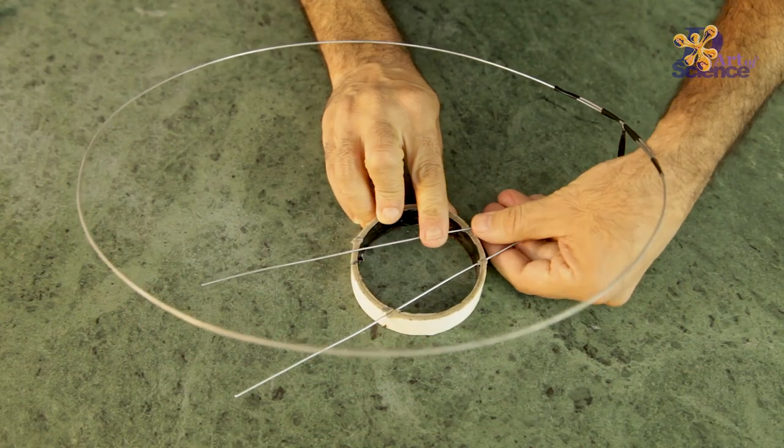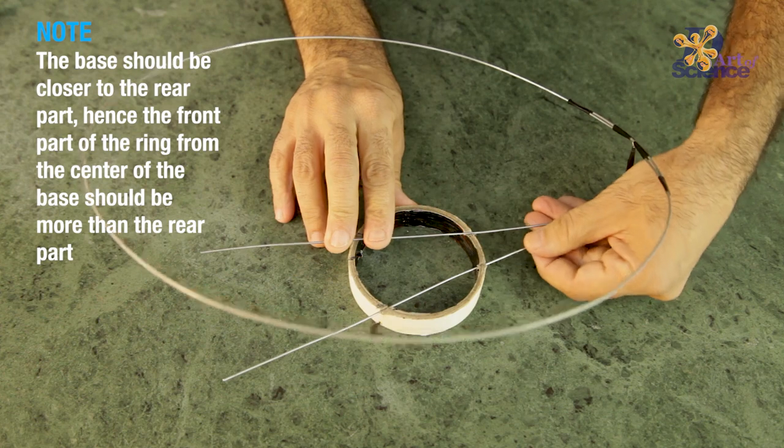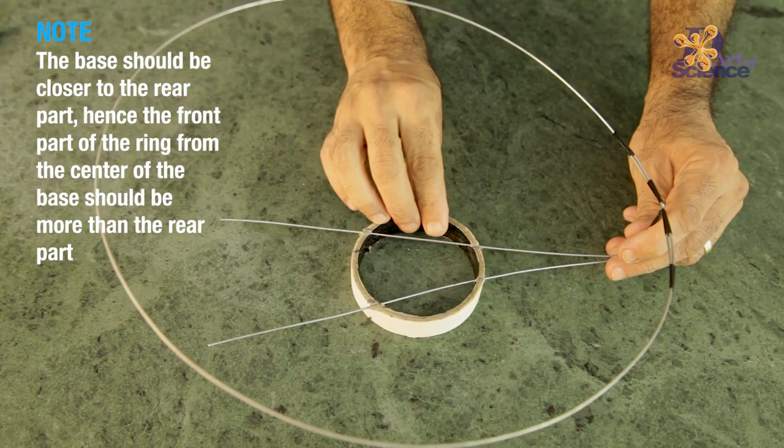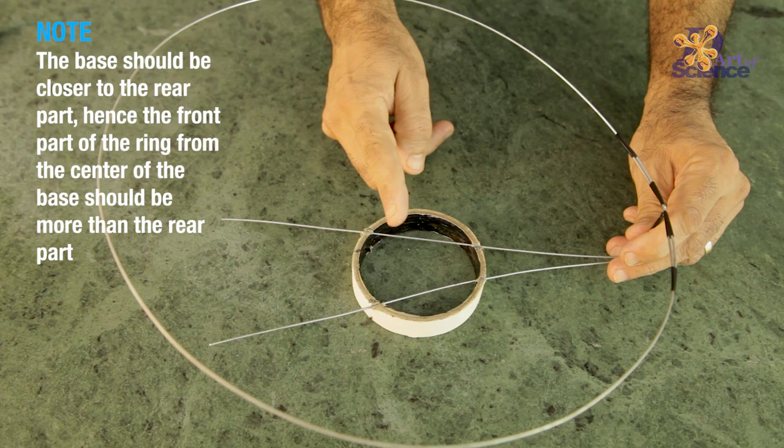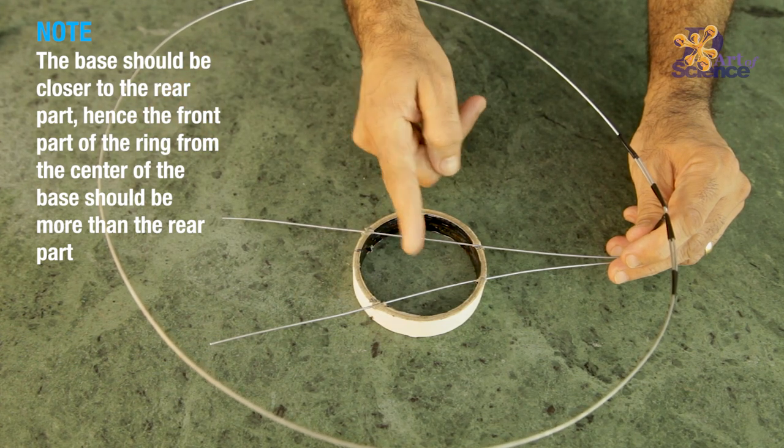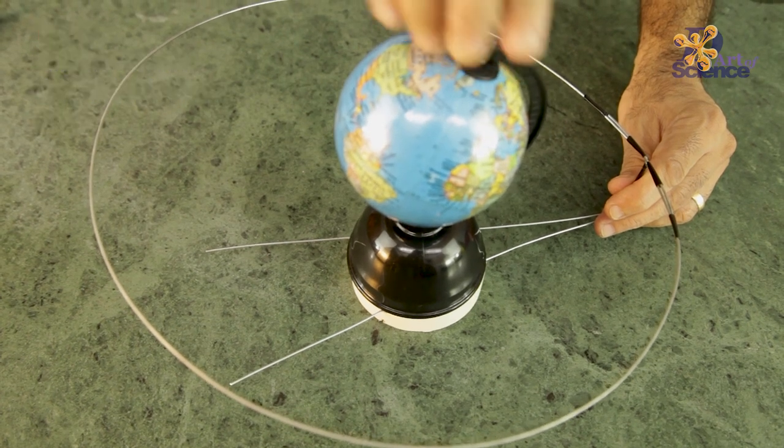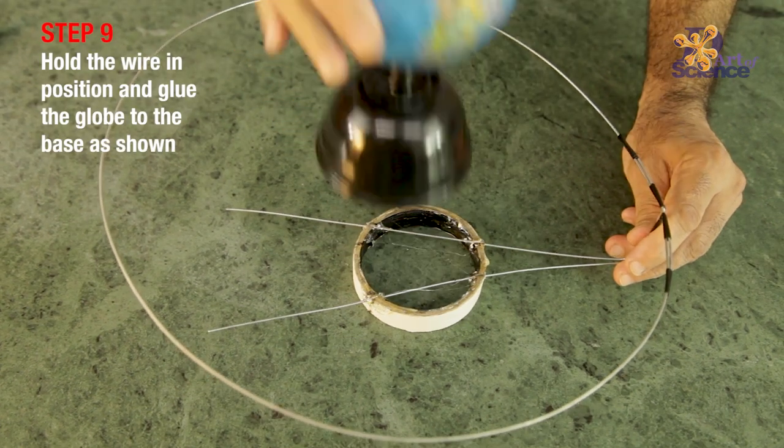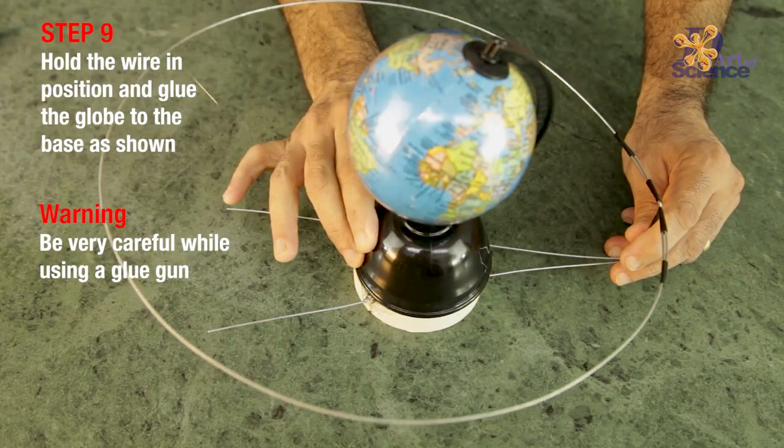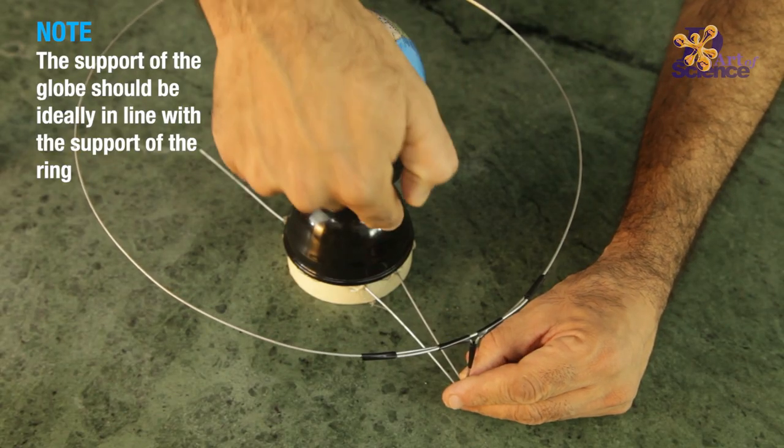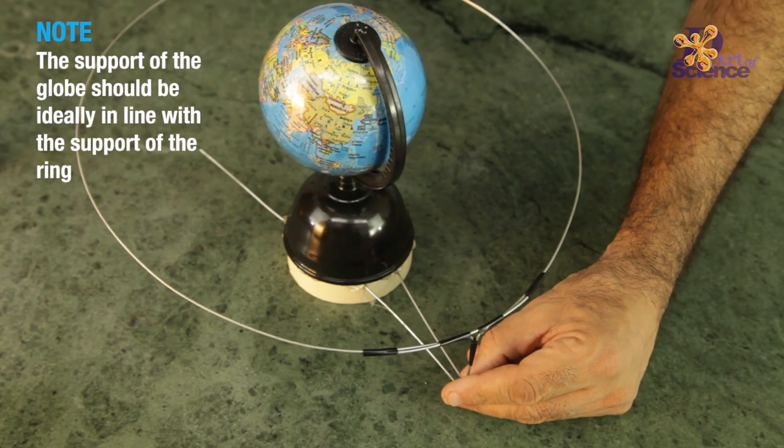Put the wire in as shown. Keep in mind that the base should be closer to the back and therefore the front part of the ring from the center of the base should be more than the rear part. It will correct itself later. And this is how the globe will be placed. Use glue to stick the globe on the base and then let it set. The support of the globe should ideally be in line with the support of this ring.